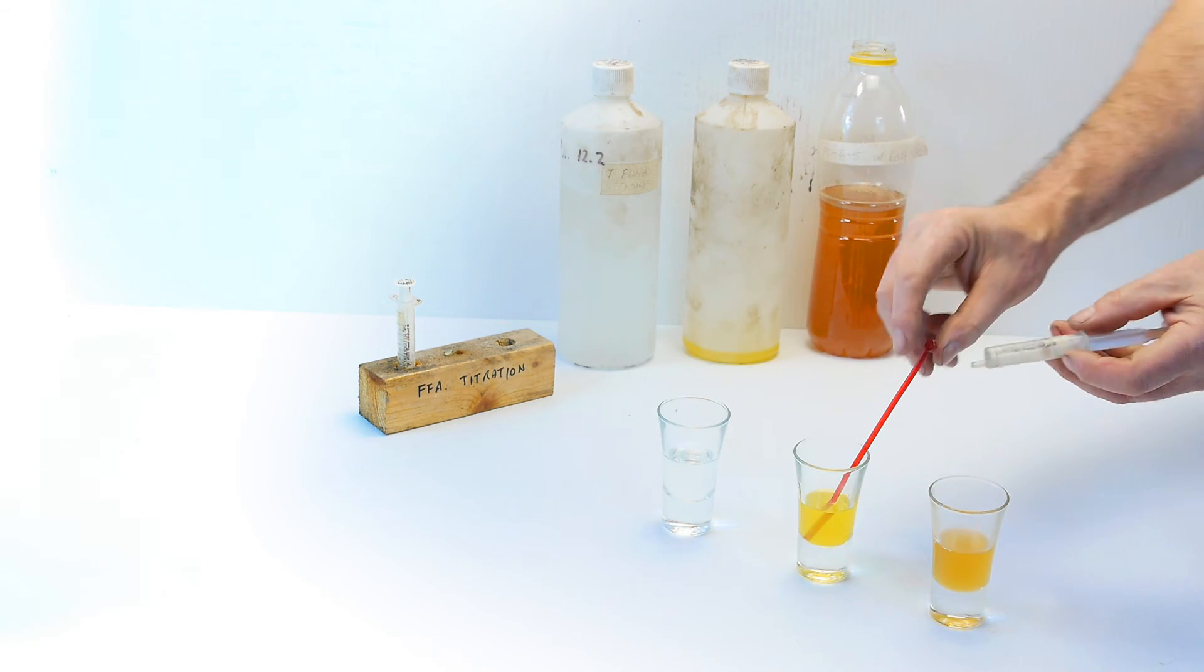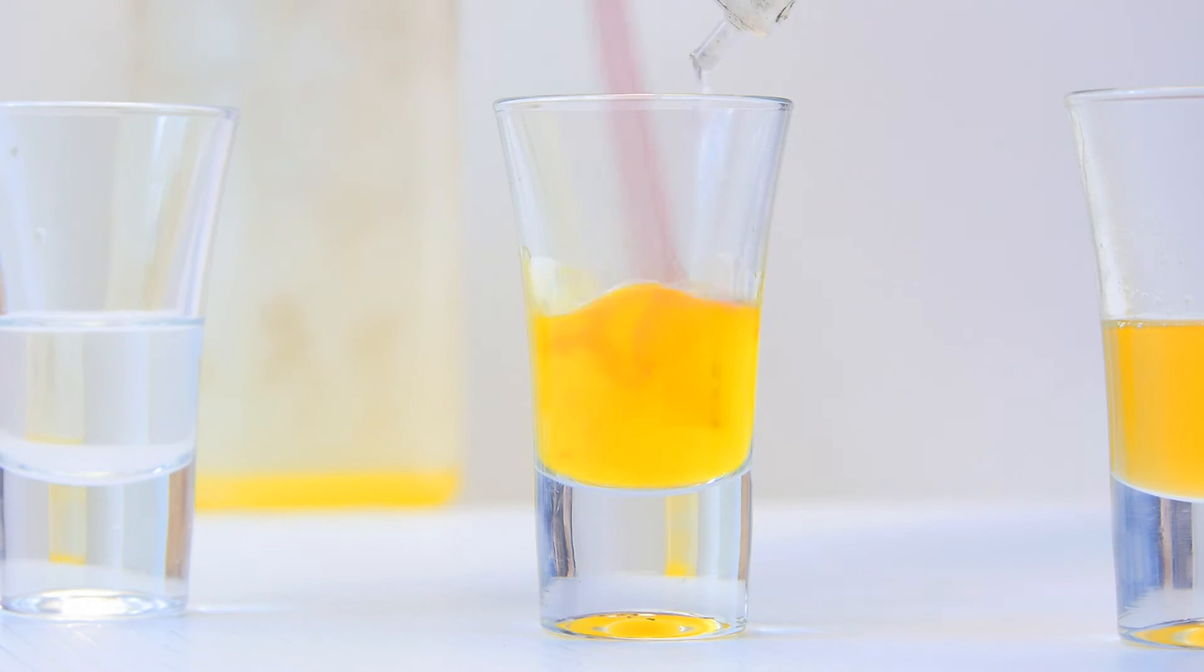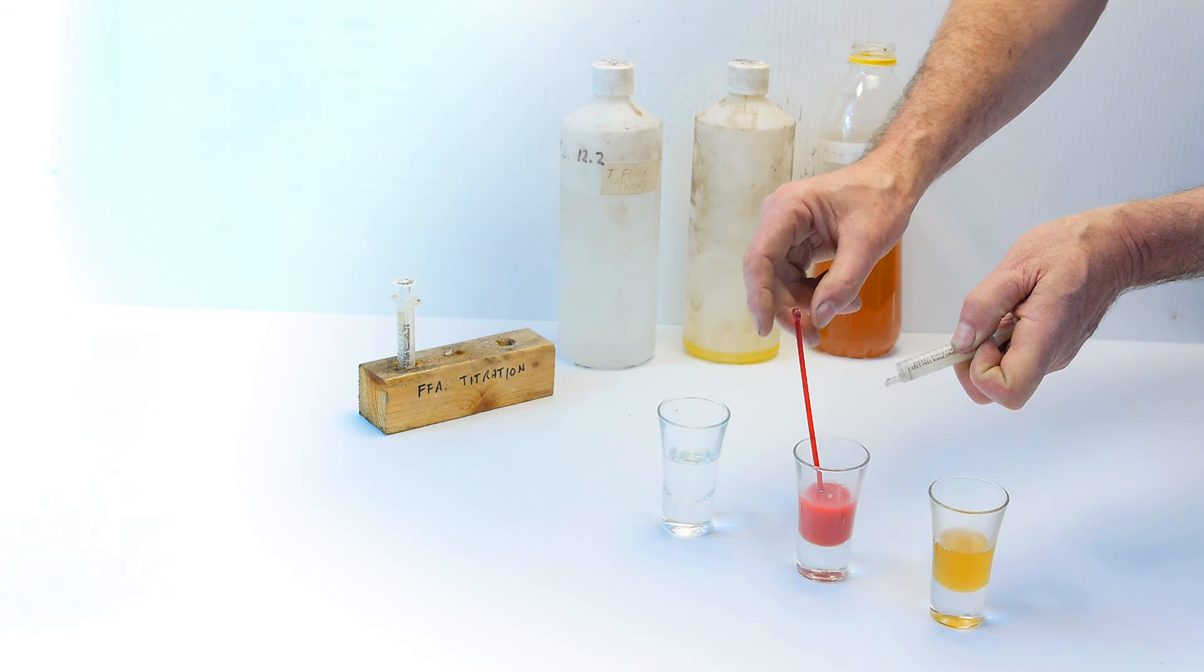Now, drip in the titration fluid, drop by drop, stirring all the time. You will see little flashes or splashes of red occur. Keep going until you see a deep red or a deep pink color. Not orange, not yellow. That is the point at where you stop.